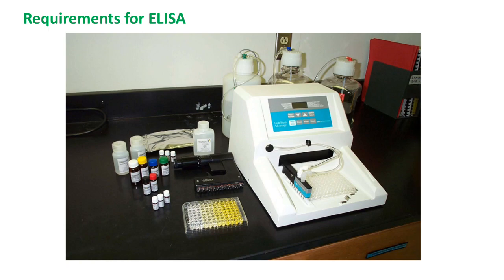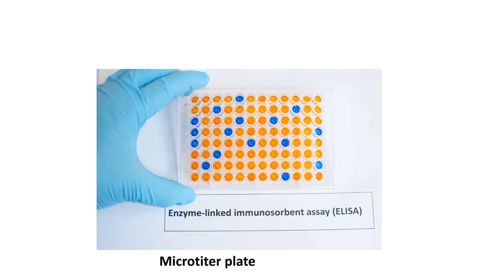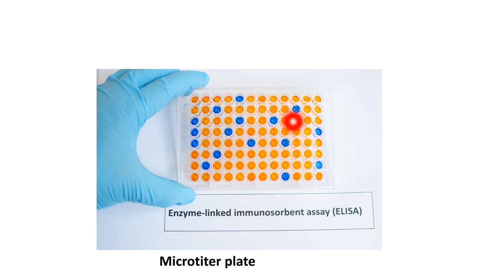Here you can see the ELISA washer and reader instruments, as well as micropipettes, microtiter plates, and reagents including enzyme conjugates and wash buffers. The microtiter plate contains 96 wells. Initially we add positive and negative controls and standards, and based on the concentration of the analyte, the color is developed and quantified by spectrophotometer.